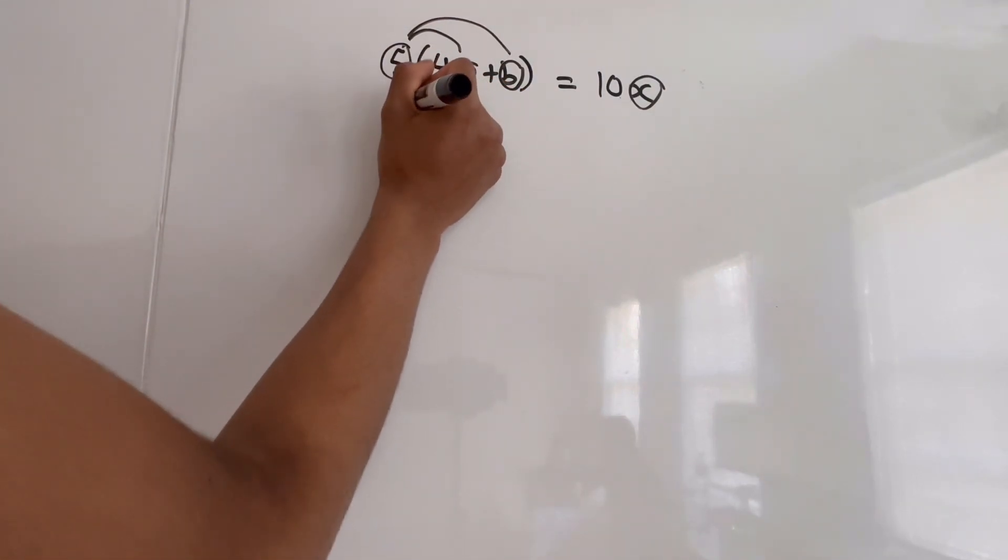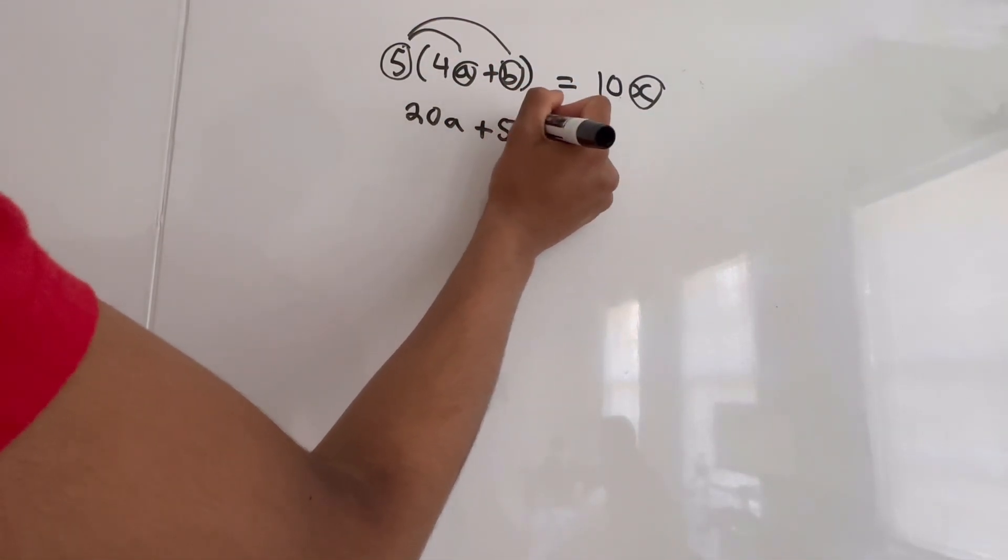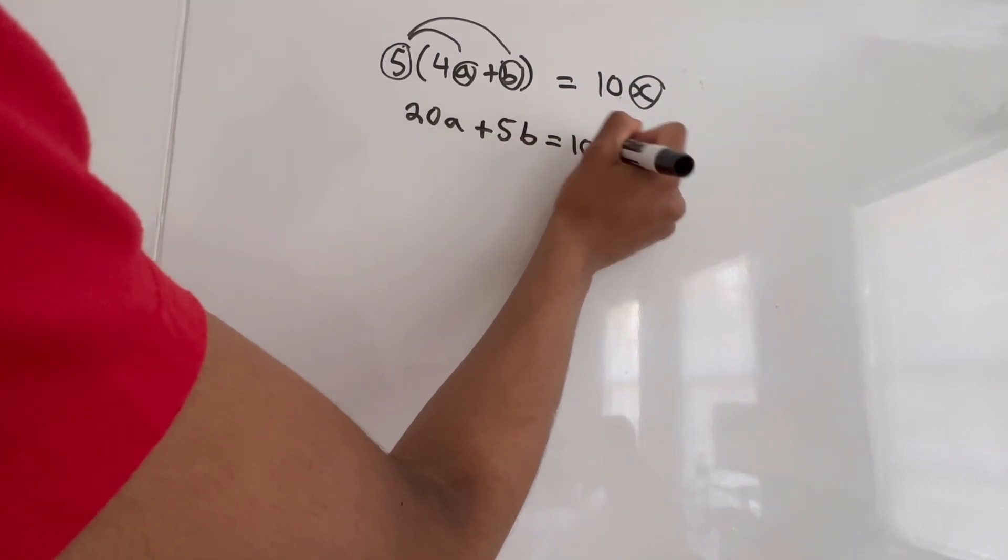5 times 4A, that's 20A, plus 5 times B is 5B, and this equals 10X.